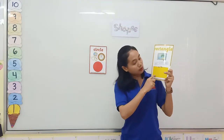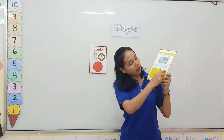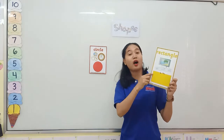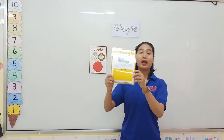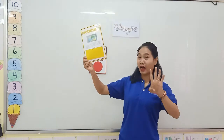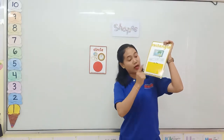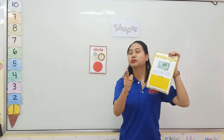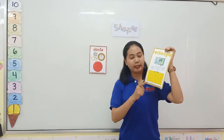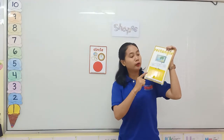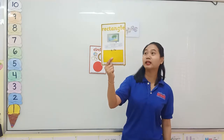One, two, three, four. There are four sides. What color is it? Good. It is yellow. It is a yellow rectangle.